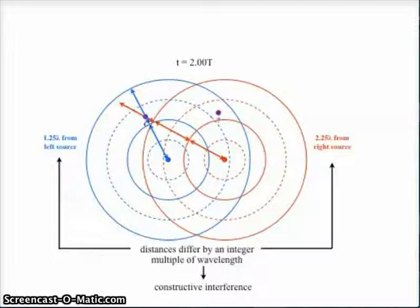Our purple point is exactly one wavelength further from our red wave source than our blue wave source. And that means that that's a location of constructive interference. That those two waves are going to line up when they reach that spot.